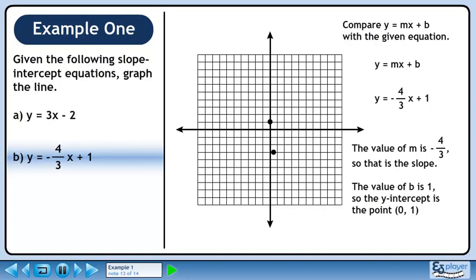Follow the slope by going down 4 units and right 3 units. This gives us a second point on the line. Now that we have two points, we can draw the line.